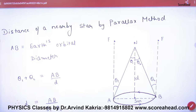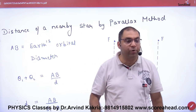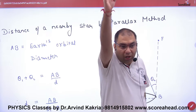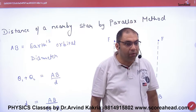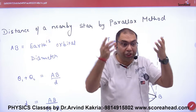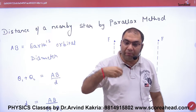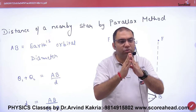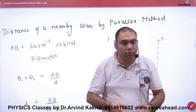Now someone asks: can we do the same for a star, which is much farther than the Moon? The problem is that a star is so far away that even if you go from one place to the other, the star looks in the same direction — the parallax angle becomes almost zero. So this same method doesn't work directly for stars.